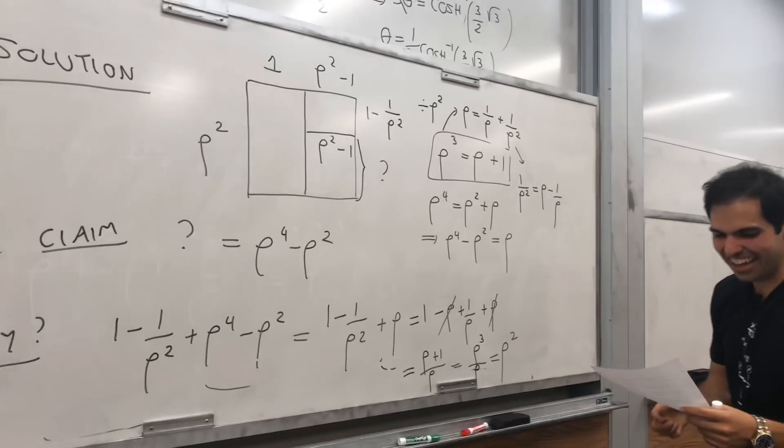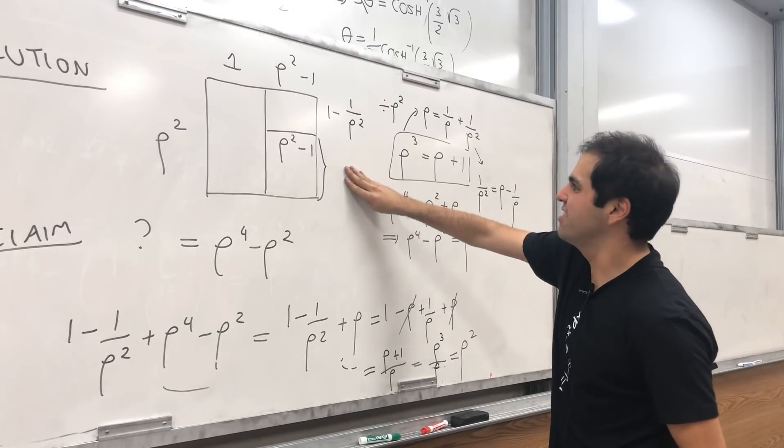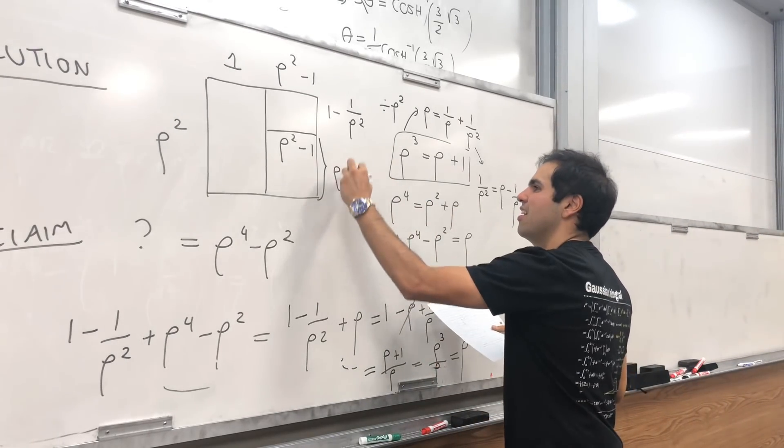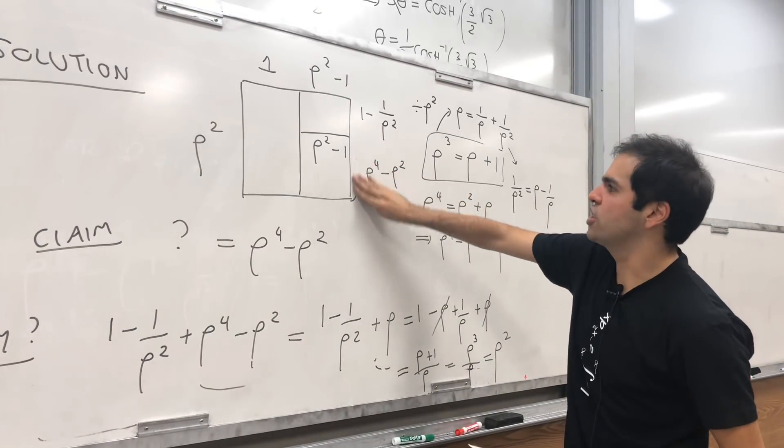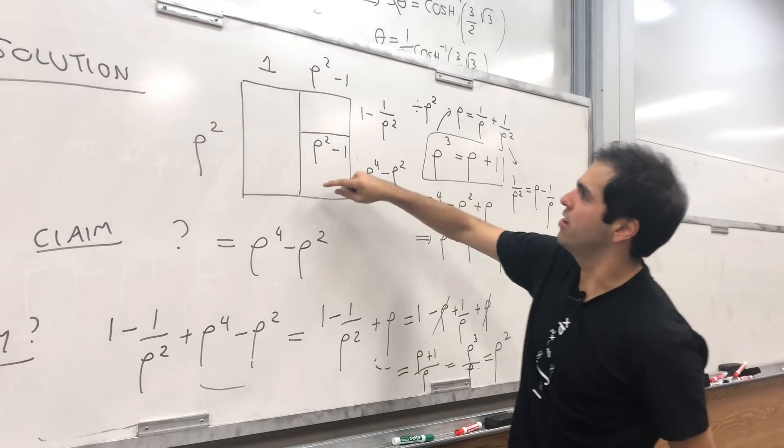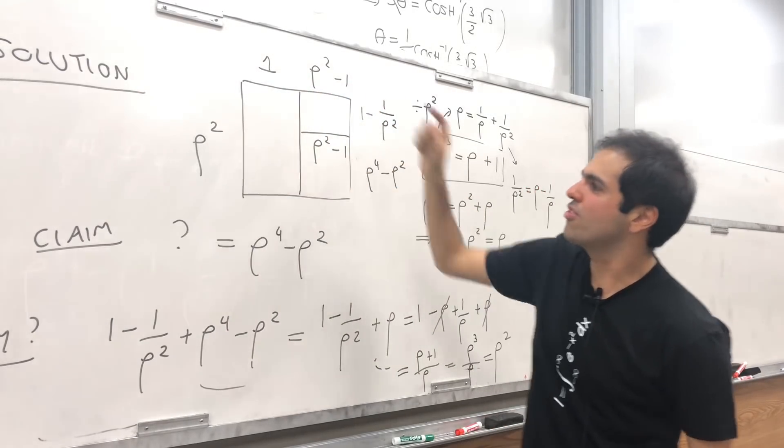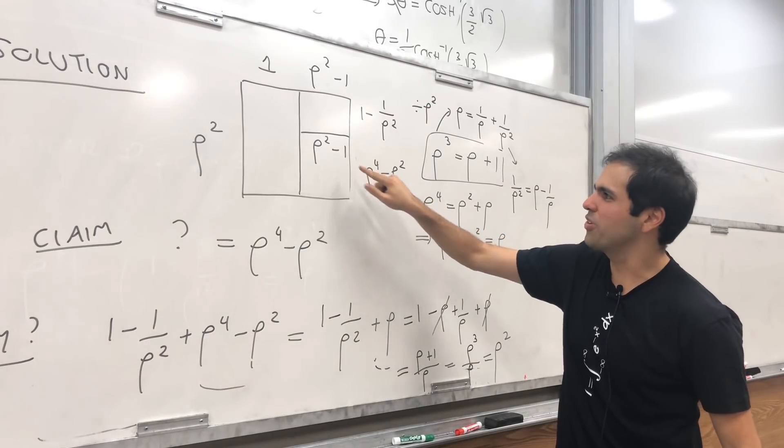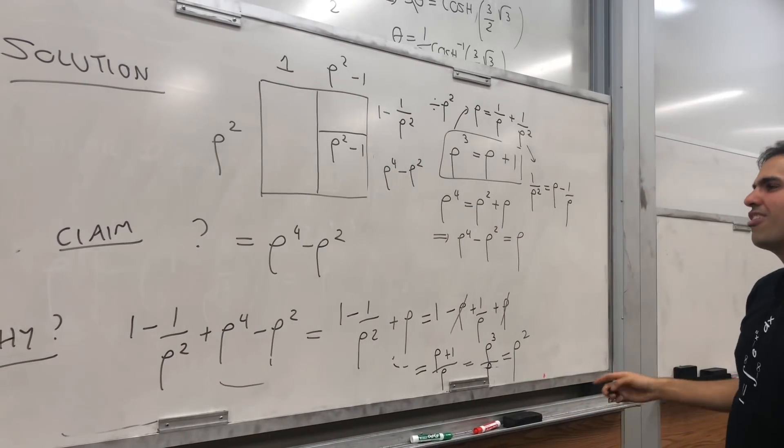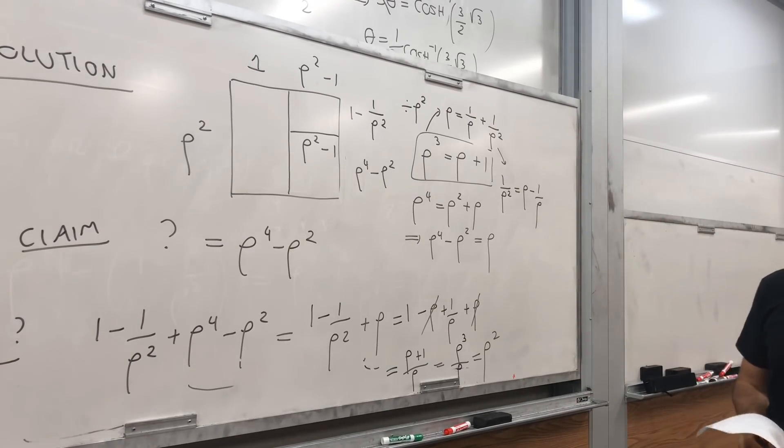Okay, yes. And indeed you can check. So if this is rho to the 4th minus rho squared, you can indeed check that the aspect ratios of everything is the same. So aspect ratio of this and this, it's either like 1 over rho squared or rho squared, one of the two. And same thing here, rho squared minus 1 over rho to the 4th minus rho squared, it's either rho squared or 1 over rho squared, one of the two.